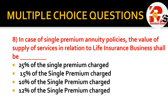In the case of single premium annuity policies, the value of supply of services in relation to life insurance business shall be — options are 25%, 15%, 10%, or 12% of the single premium charged. Remember the correct percentage for this question.